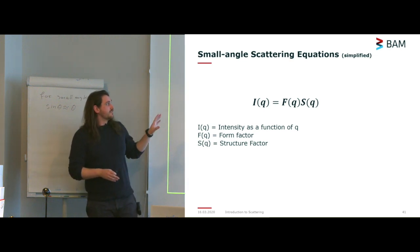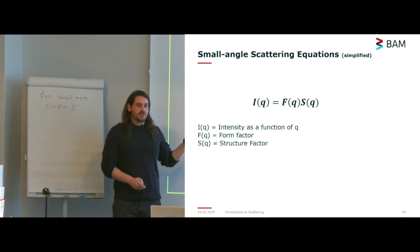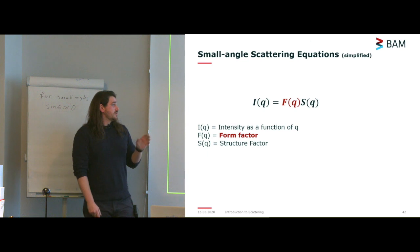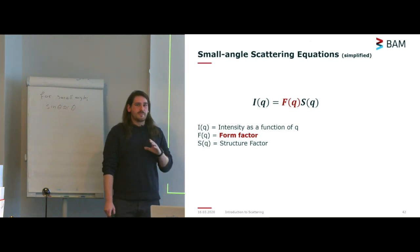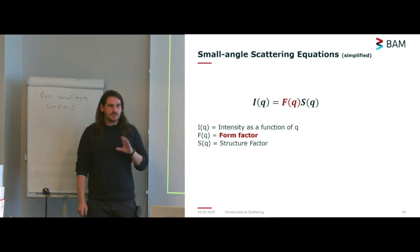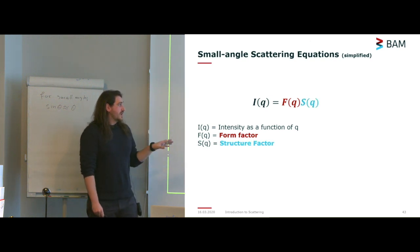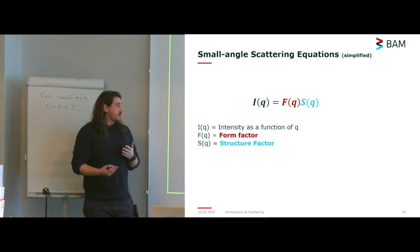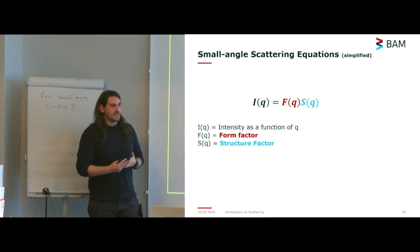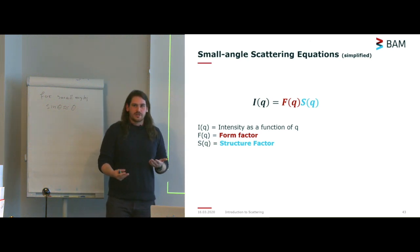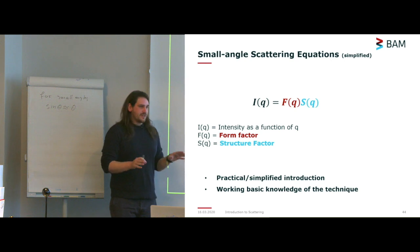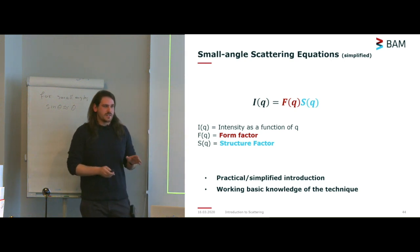Here is a very simplified version of the scattering equation. It is made up of two parts mainly: the form factor, which gives you information on the shape and size of your particles, and the structure factor, which gives you information on how particles are packed together. These are the two main fundamental things to think about when looking at your small angle scattering data. I'm simplifying things as much as possible just to give you a general idea of how things work.